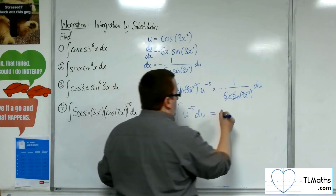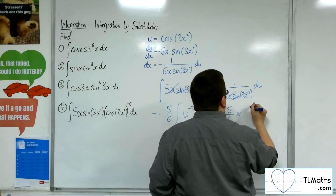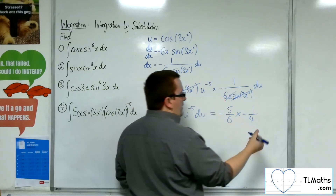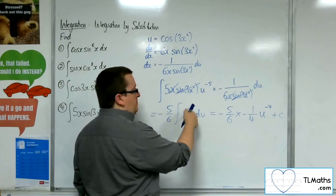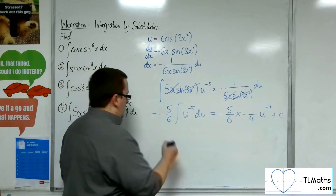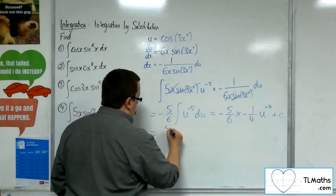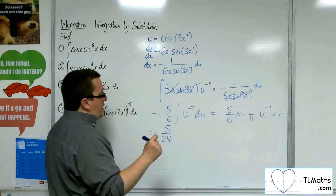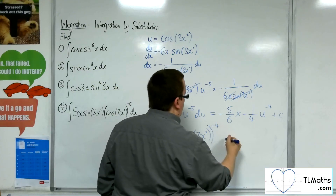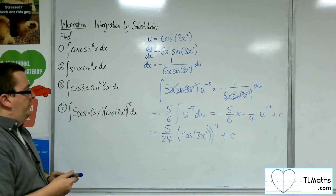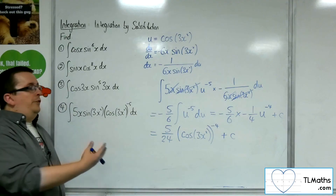Now I just want to add 1 to the power and divide by the new power. So we've got minus 5 sixths. Adding 1 to minus 5 gets us to minus 4, so times by minus 1 over 4, giving u to the minus 4 plus our constant of integration c. So minus 5 sixths times minus 1 quarter gets us to 5 twenty-fourths. The u was cosine of 3x squared, so we get 5 twenty-fourths times cosine of 3x squared to the minus 4, plus constant of integration c. So this horrible looking thing integrates to this. And that answers question number 4.